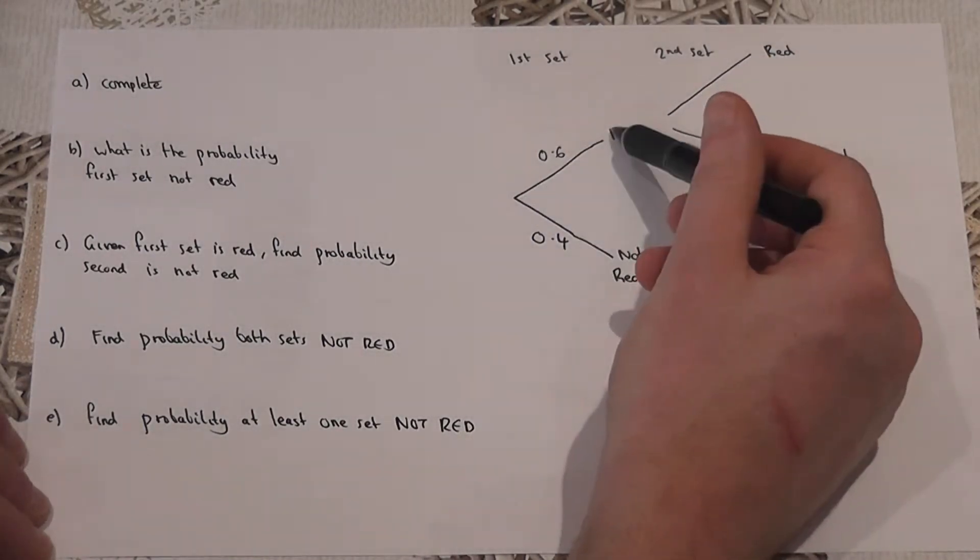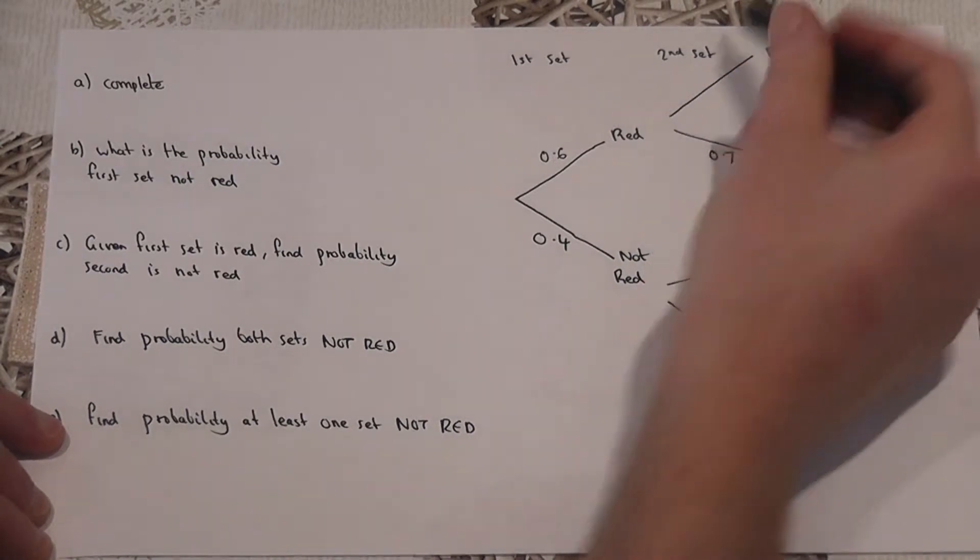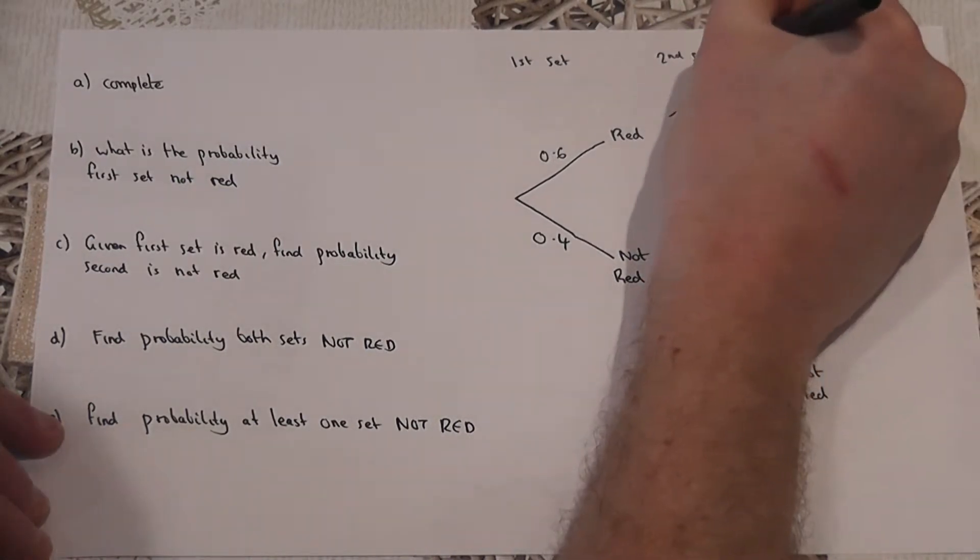If the first set is red, then the chance of not being red is 0.7, so the chance of being red has got to be 0.3.